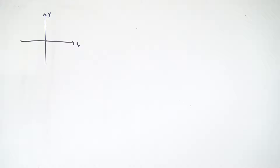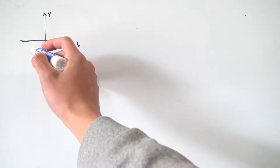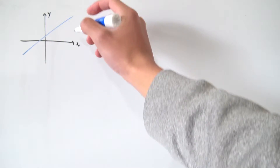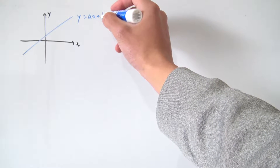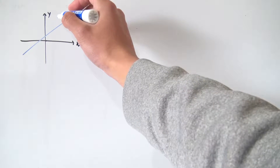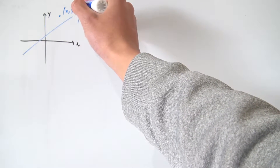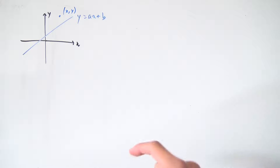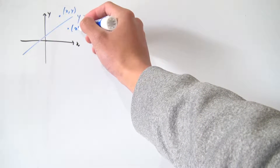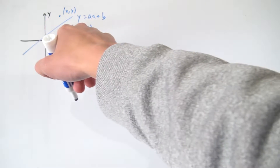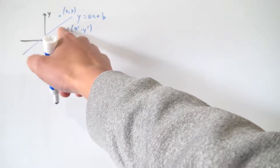Hello everybody, and today we're going to be having a look at reflections through linear lines. Let's say we have our xy plane and we have some linear relation — say the equation of this line is y equals ax plus b. And let's say we have some point with coordinates xy, and we want to figure out some formula that can map this point to a new point, let's call it x prime, y prime, that is exactly reflected in this straight linear line.